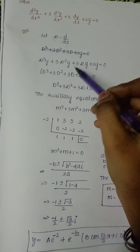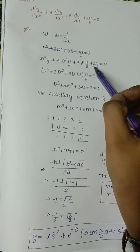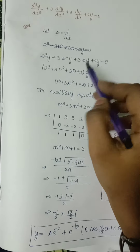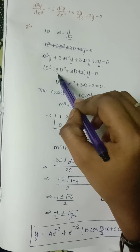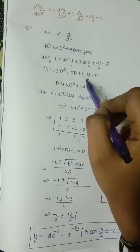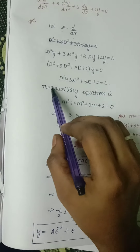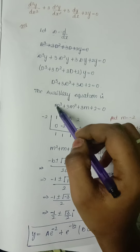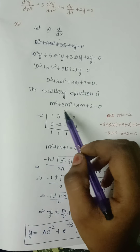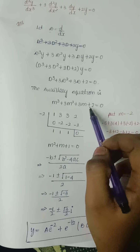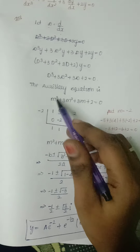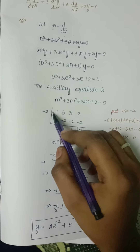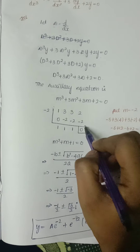Taking y as common, we get D³ + 3D² + 3D + 2 = 0. The auxiliary equation is formed by replacing D with m, giving us m³ + 3m² + 3m + 2 = 0.